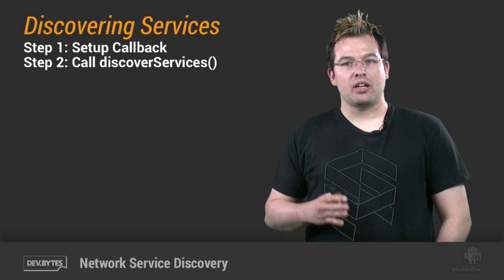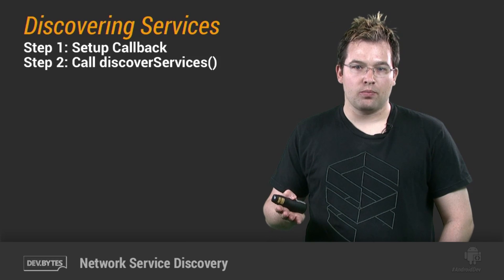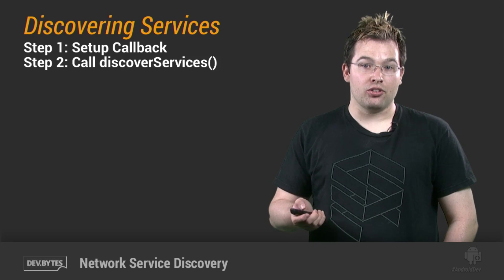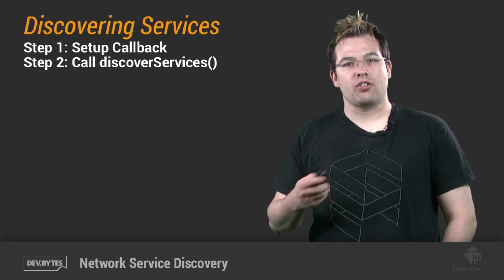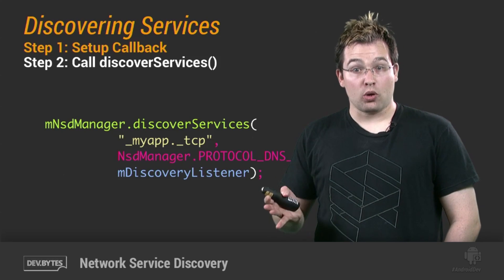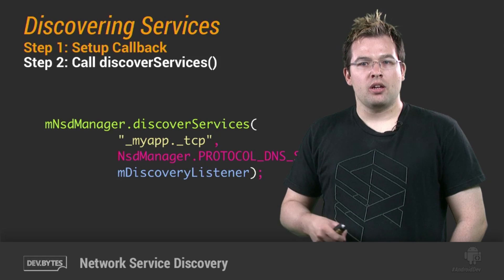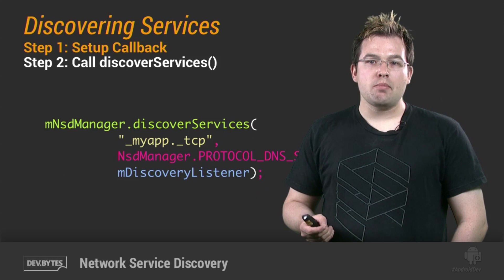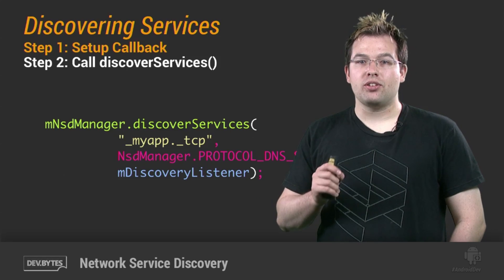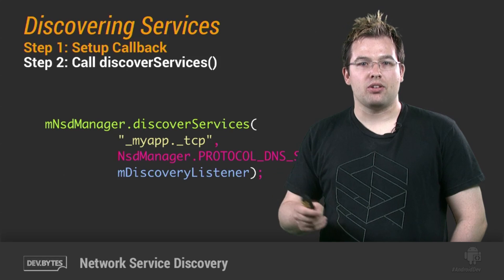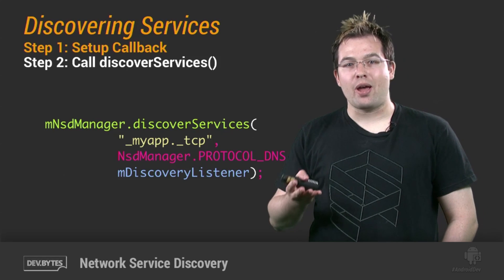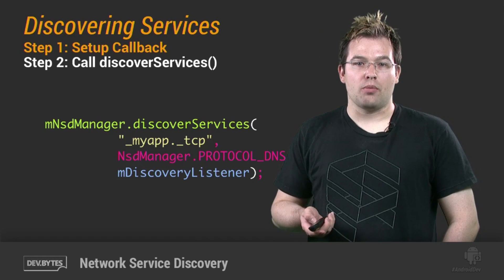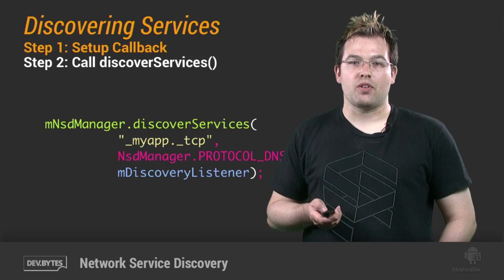Now that our app is registered, let's take a look at how to issue a query to find other devices. Service discovery, like service registration, has two steps: setting up a discovery listener with the relevant callbacks, and making a single asynchronous API call to discover services. We'll start with the call to discoverServices. Here, you'll pass in the service name you're interested in — something like _myapp._tcp — the name of the discovery protocol to use, which is always DNSSD. This is not the protocol of your app; it's the service discovery protocol. Right now Android only supports DNSSD, so this argument will always be protocol DNSSD. And finally, a discovery listener object, which is what we'll use to get the results of this discovery process.